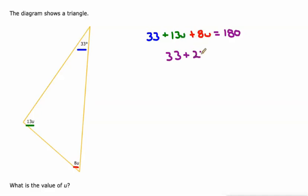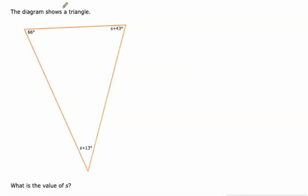So let's start off by combining like terms here. 13u and 8u makes 21u. Then we'll subtract 33 from both sides, which is 147. 180 minus 33 is 147. Then we'll divide both sides by 21 and we'll know the value of u, which is 7 or 7 degrees. IXL will put the degree sign in there for you, you just got to type the 7.